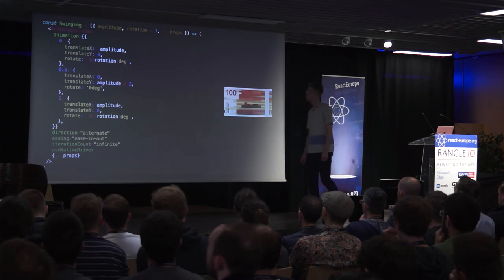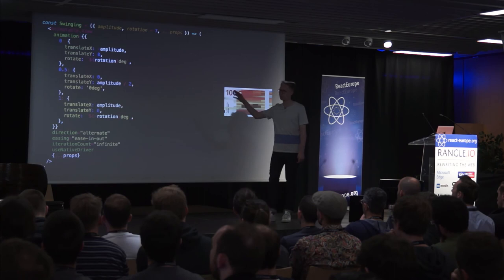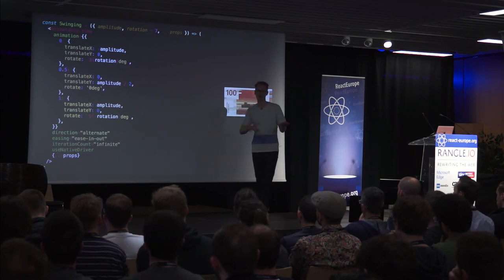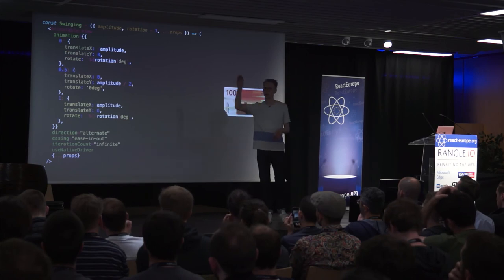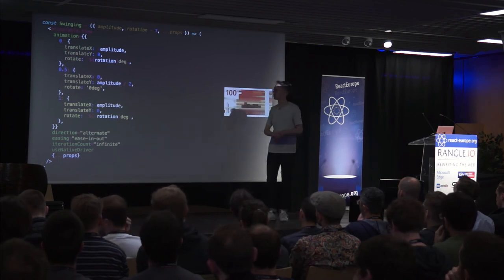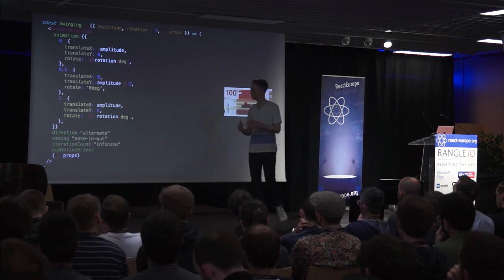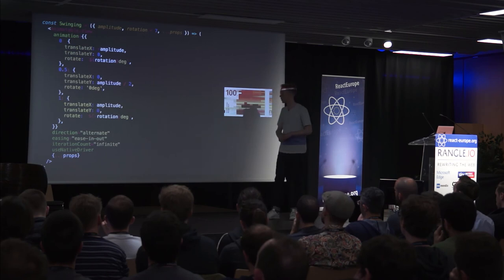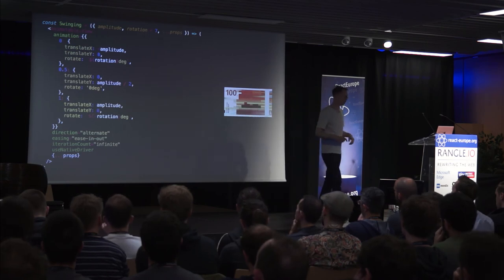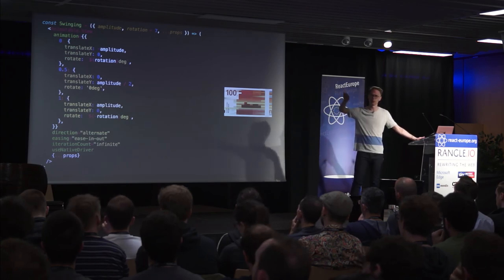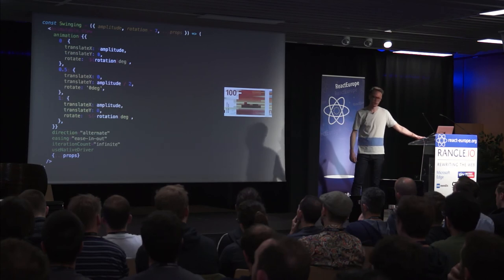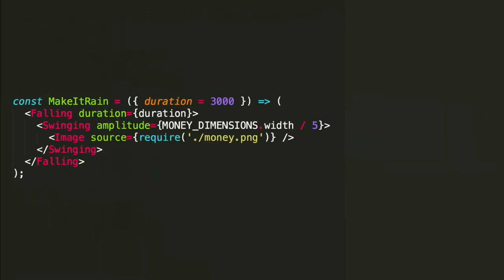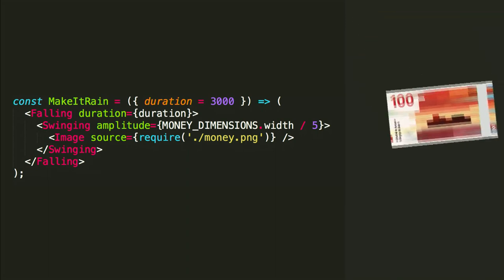For the swinging motion, we need more keyframes — we pass in an amplitude for how far it swings, with keyframes for the top of one side, the middle, and the top of the other side. We loop it back and forth from one to zero and zero to one. We also want it faster in the valleys and slower at the ends, so we use a different easing function. Combining the falling and swinging motion, we get something like this.